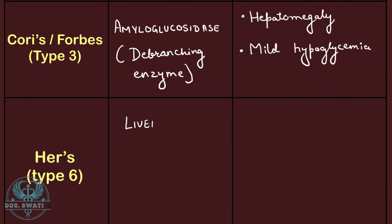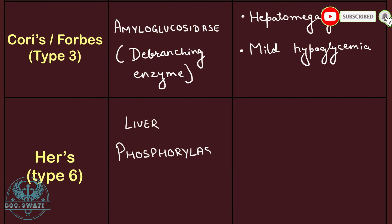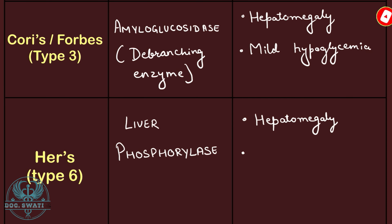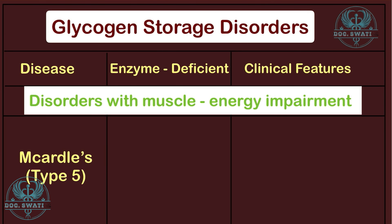The last disorder in the hepatomegaly and hypoglycemia group is Hers' disease, which is Type 6 glycogen storage disorder. It is caused due to the deficiency of liver phosphorylase. Clinical features include hepatomegaly and hypoglycemia. Moving ahead, let's talk about disorders with muscle energy impairment.